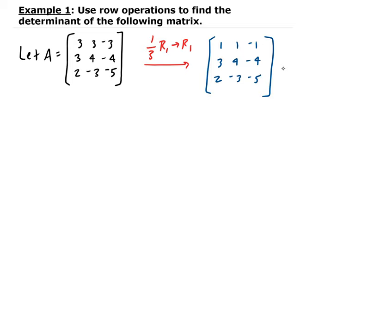Now I'm going to take minus 3 times row one and add it to row two. So then we get 1, 1, negative 1. This will be 0 — so minus 3 plus 3 is 0; minus 3 plus 4 is 1; and minus 3 times negative 1 is 3, then minus 4 gives us negative 1. And then for the last row, we have 2, minus 3, negative 5.